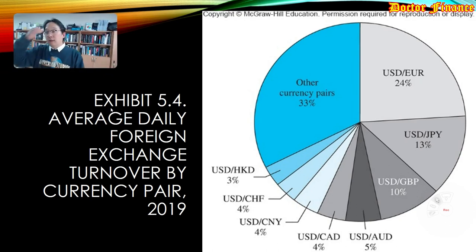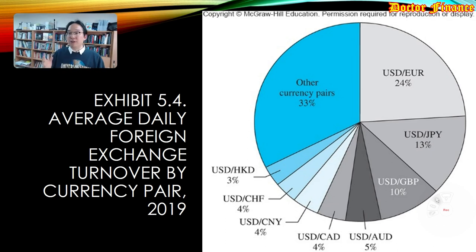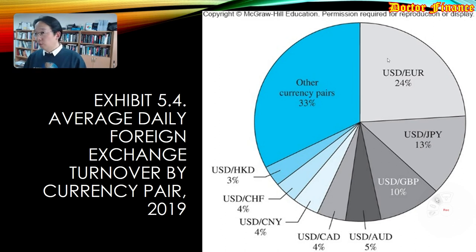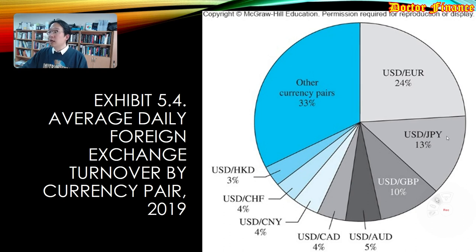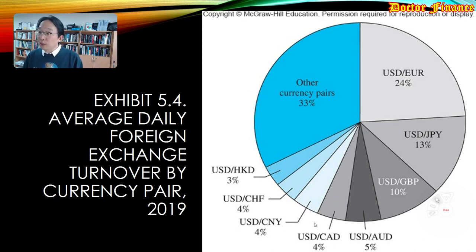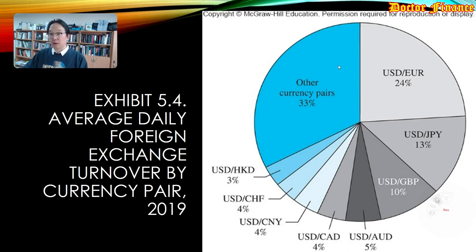Exhibit 5.4 shows the average daily foreign exchange turnover by currency pairs. The dominant pair is US dollar to Euro — transatlantic transactions. Then US dollar to Japanese yen, US dollar to British pound, Australian dollar, Canadian dollar, Chinese yuan, Swiss franc, Hong Kong dollar. Korean won is somewhere further down the list.